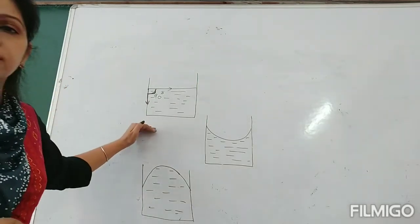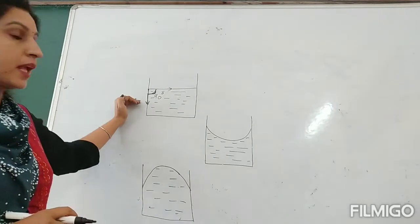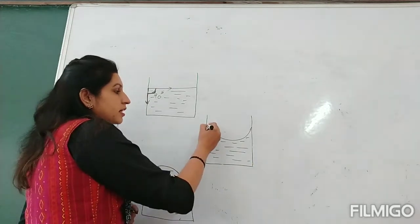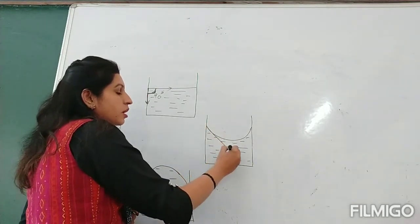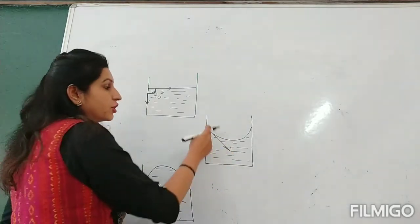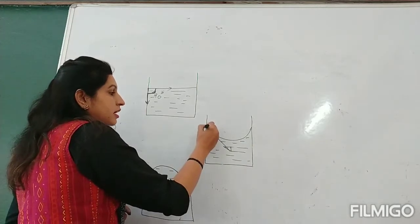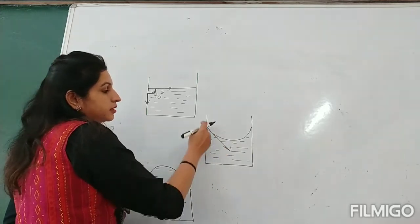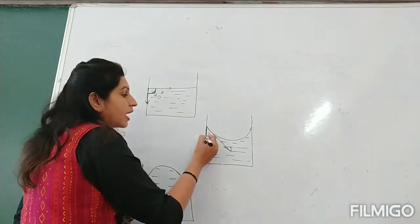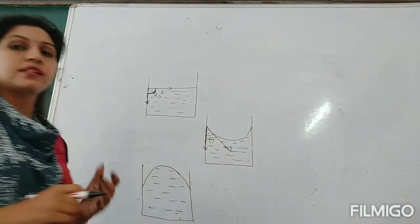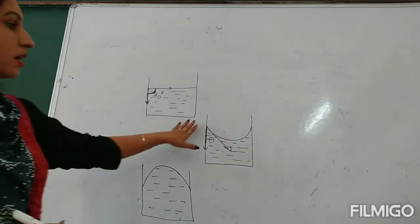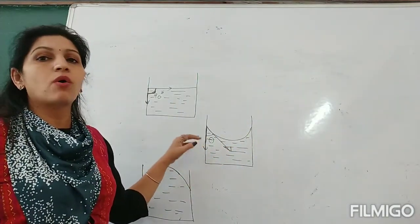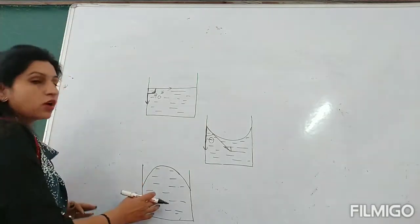So for a plane meniscus the angle of contact is always 90 degrees. For the concave meniscus — drawing the tangent to the liquid surface (downward, because liquid is present there) and the tangent to the solid surface — the angle between them is clearly acute. So whenever there is a concave meniscus, the angle of contact is always acute.